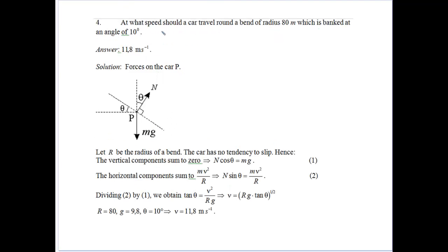And question 4 here, we've got to work out what speed the car should travel around a bend at 80 metres, which is banked at an angle of 10 degrees. We've set this up because we want it to have no tendency to slip. That would be the ideal situation. So we set up our equations again, and we do our division to get tan theta equals v squared on Rg. Solve for v, sub in the radius of 80, gravity of 9.8, and angle of 10. We get velocity being 11.8 metres per second.